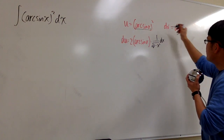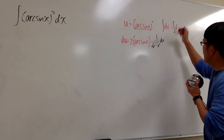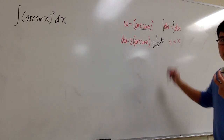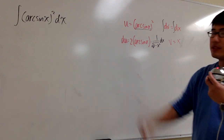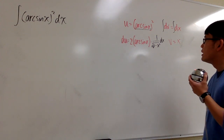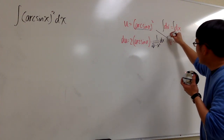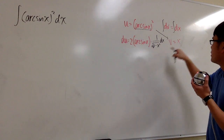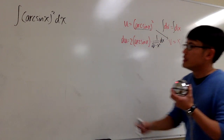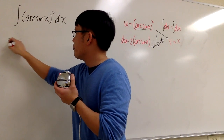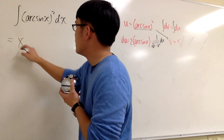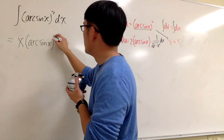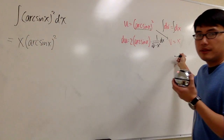We are done with that. For dv equal to dx, we integrate both sides and get v equal to x. Those are the ingredients for the first step of integration by parts. The formula says the product of the diagonal — u times v — will be part of the answer. So by integration by parts, we have x times arc sine x to the second power.